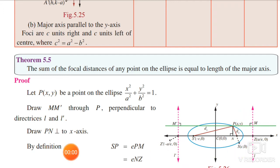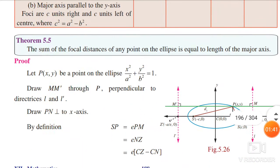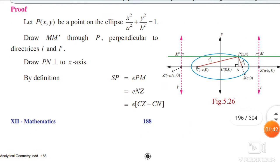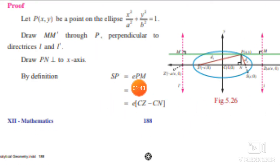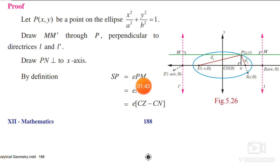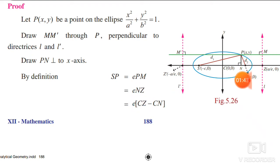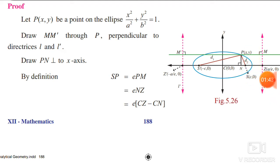By the definition of a conic, SP divided by PM is equal to e (eccentricity). Therefore SP is equal to e times PM. Since PM equals NZ (because P is perpendicular from N), we can write SP = e into NZ.